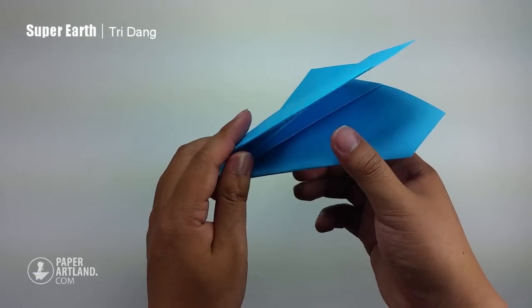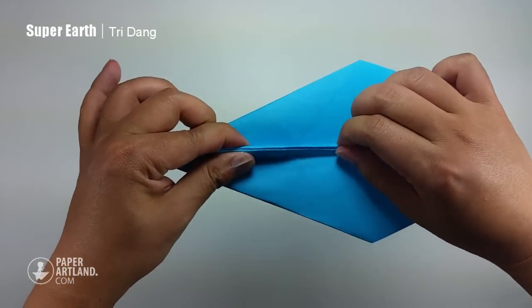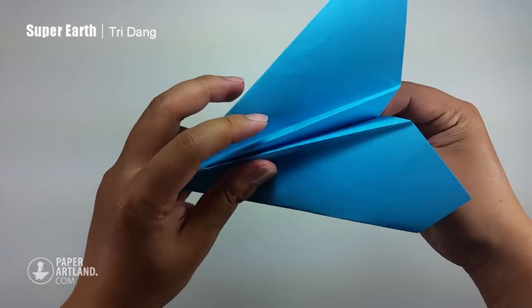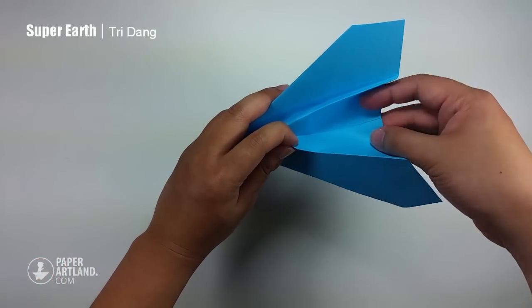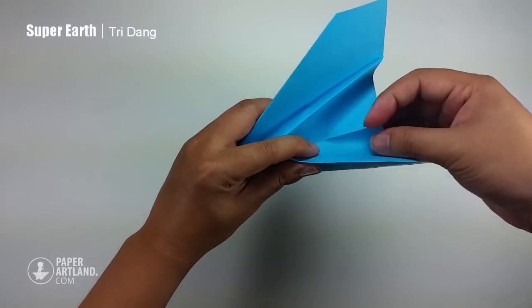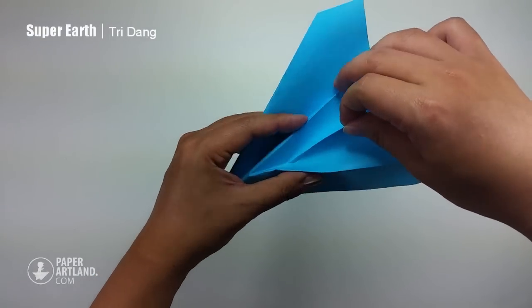And next step, we are going to create the center stabilizers. Now I will hold the paper this way. And we can see the bottom here. Hold the bottom percolator and pull it up to create the stabilizer. Pull it up like this.